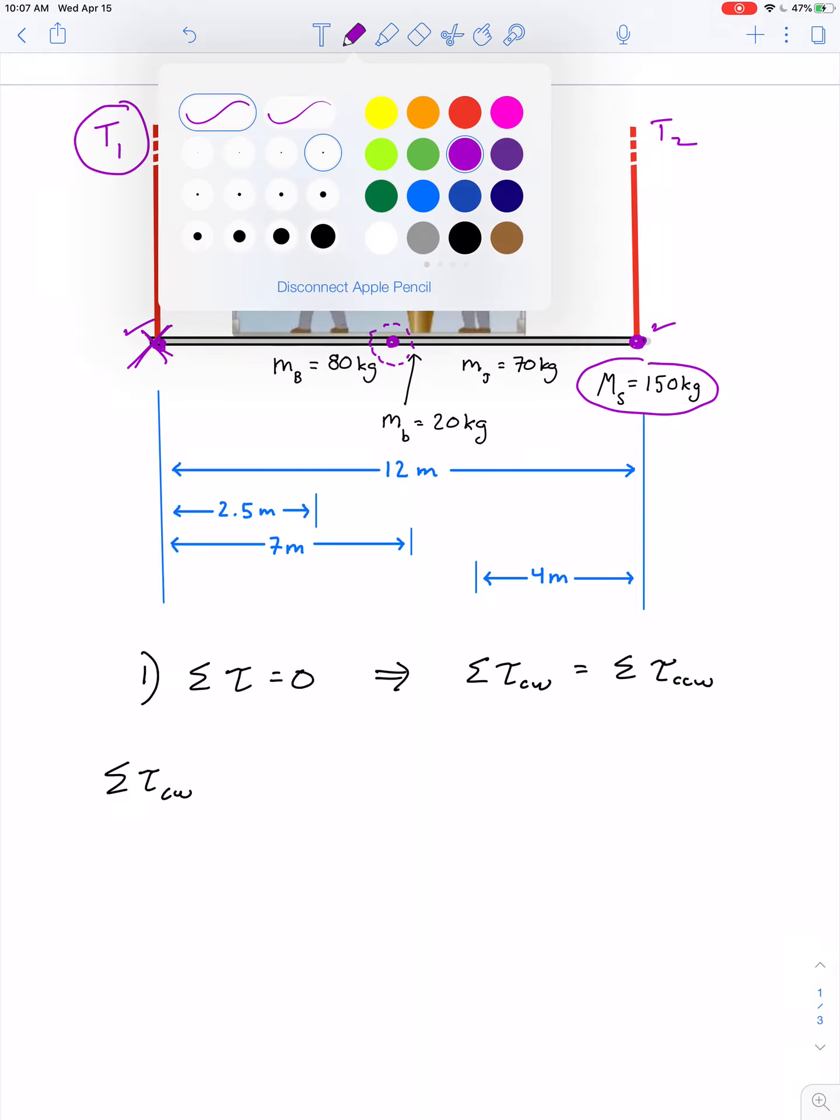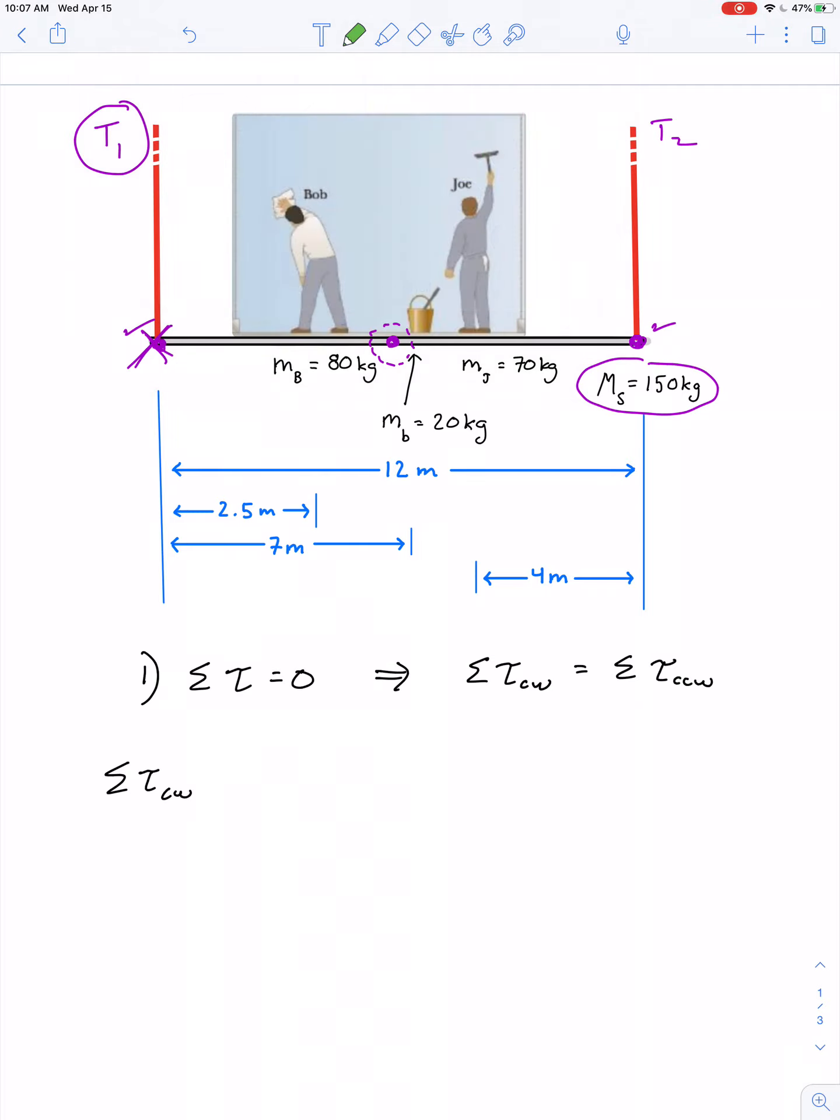The weight of Bob would pull down with a lever arm and make the scaffold want to rotate clockwise. The weight of the entire plank, Joe, and the bucket all add clockwise torques. The only thing that produces a counter-clockwise torque is the tension in cable number two pulling upward.